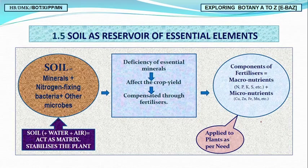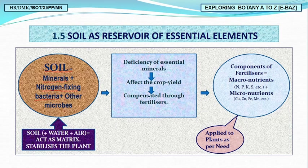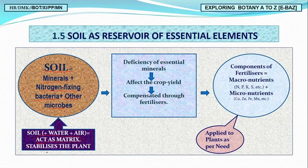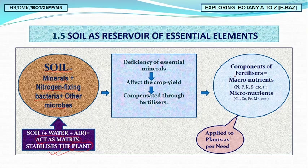During rock weathering and breakdown, soil becomes enriched with dissolved ions and inorganic salts, which are essential for the growth and development of plants. Soil also contains nitrogen-fixing bacteria and other microbes. With water and air, this composition makes soil a matrix that stabilizes plants and supplies all their nutritional requirements.